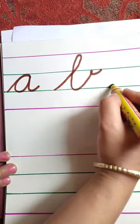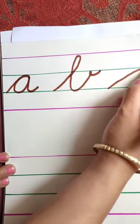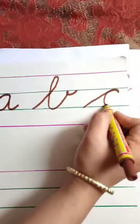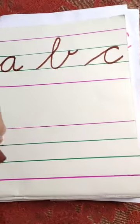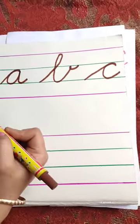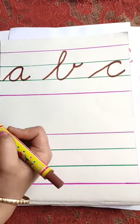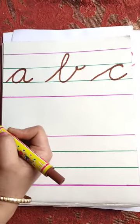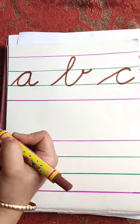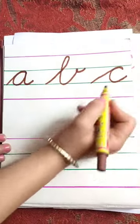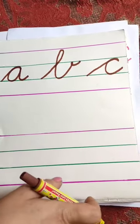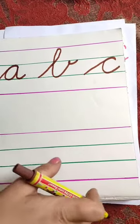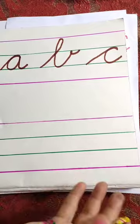Next letter is C. And the sound of C is K. C, C, Cat. C, C, Candle. C, C, Cake. C, C, Camel. C, K, Caterpillar. Like this. C, K, Cap.